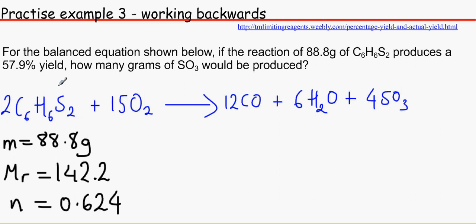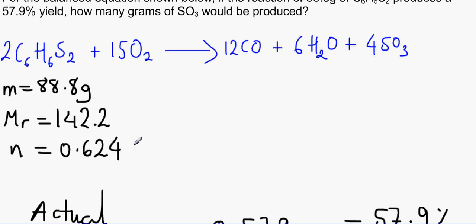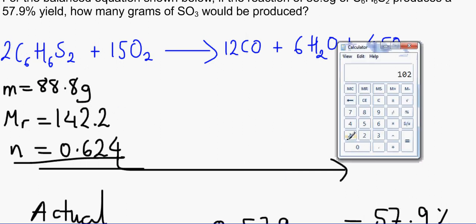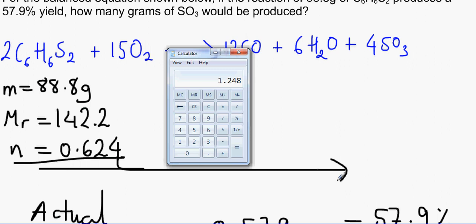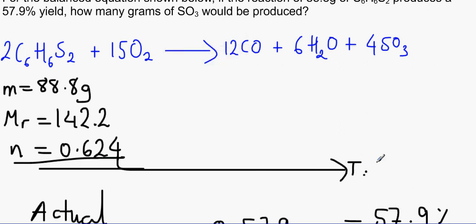For every two moles of C6H6S2, four moles of SO3 comes out. So what we've got to do, we have got to multiply that by 2, because 2 moles times 2 makes 4. So if we just do that very quickly, 0.624 times 2, it would end up with 1.248. And that is our theoretical, 1.248.